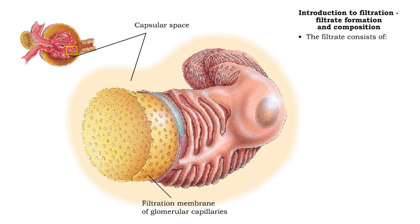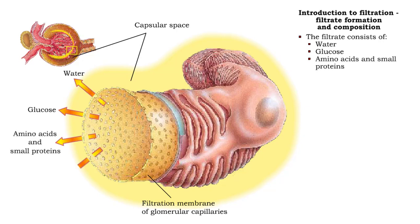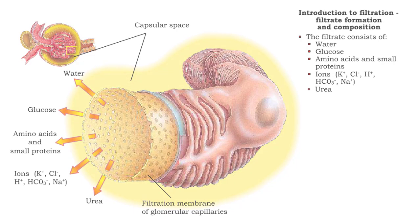Glomerular filtrate consists of water, glucose, amino acids and small proteins, potassium, chlorine, hydrogen, bicarbonate and sodium ions, and urea.